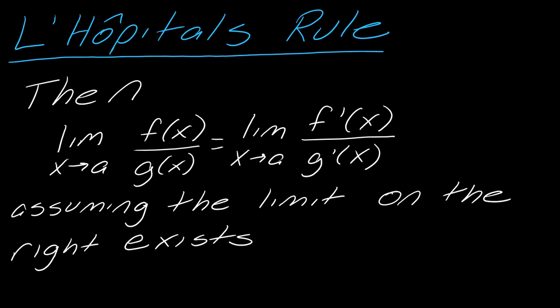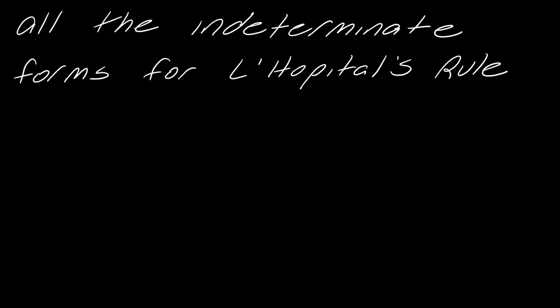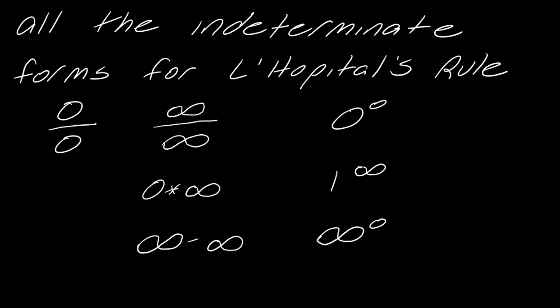This is the idea behind L'Hopital's Rule, but if you're familiar with it, you know we have other ways to use it. When we talk about L'Hopital's Rule, we think of 'a' as a number, but it can also be infinity. The indeterminate forms where we want to use L'Hopital's Rule are: 0 over 0, infinity over infinity, 0 times infinity, infinity minus infinity, and the indeterminate powers.